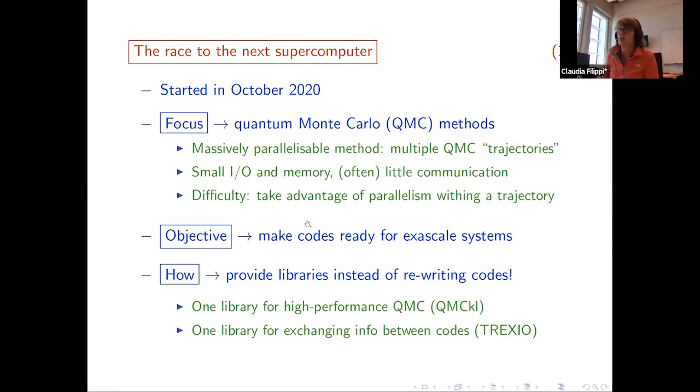And so as I said, the objective is to make the codes ready for exascale, and we discuss a lot how to do it. And in addition to working on various codes, what we want to do is we want to provide some libraries. So essentially, the core of the T-Rex project will be two libraries. One is a library of kernels, of quantum Monte Carlo kernels, which will be extracted from the different codes and rewritten for high performance. And then also we're going to have one library for input-output, for exchanging info between the codes. So we're having QMCKL and we're having T-Rex IO.